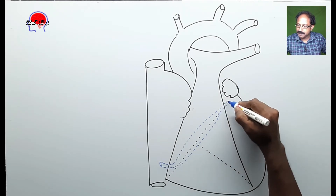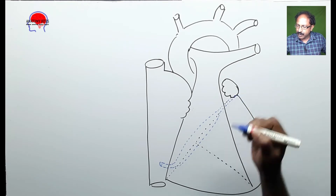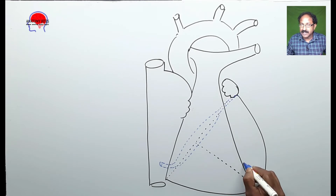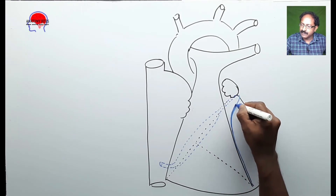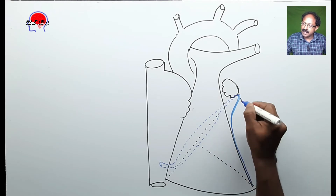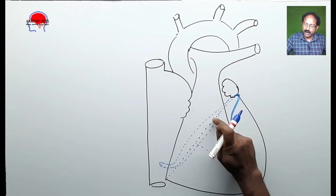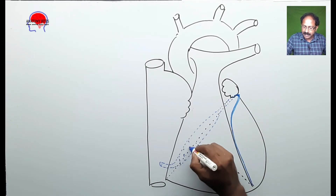This is basically the main tributary of the coronary sinus. It starts from the lower part of the anterior interventricular groove, which is visible from the anterior. It ascends and turns to the left along the left margin, then turns posterior and ends in the left end of the coronary sinus. This part is basically the coronary sinus.